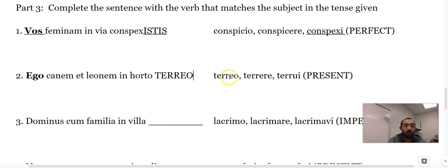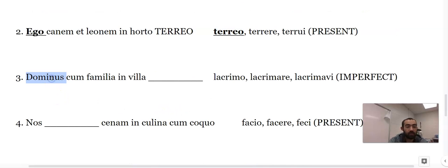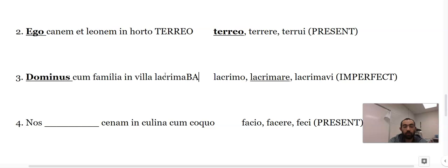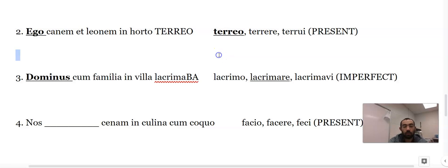I - because it's ego, ego would be this one. Dominus, this is our subject dominus, and we're trying to say was crying, so it's going to be lachrimo, lachrima-, b-a-t, lachrimabat.